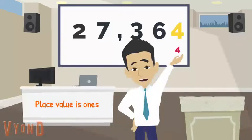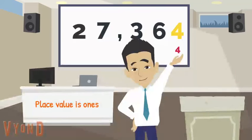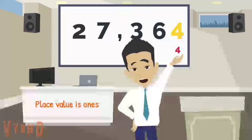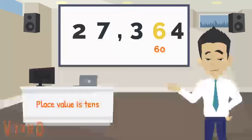Let's begin with the digit 4. What is the digit value of 4? Its digit value is 4, because its place value is ones. What is the digit value of 6? The answer is 60, because its place value is tens.